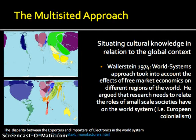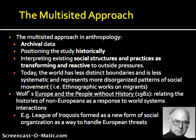Another approach is the multi-sided approach, which came about primarily in the 1960s and 70s when anthropologists began to realize that their work in individual communities could not account for every social and cultural phenomenon they were witnessing. The intent of the multi-sided approach is to situate cultural knowledge in relation to global context. This draws from Immanuel Wallerstein's world systems approach, which took into account the effects of free market economics on different regions and held that no areas were completely isolated from global phenomena. Wolf gives the example of the League of the Iroquois, which formed as a new kind of social organization in response to multiple European threats.